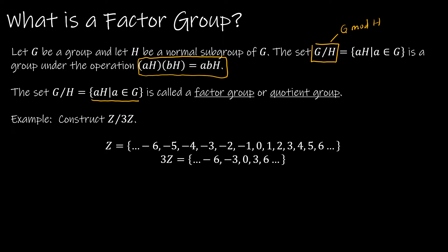Let's talk about how we construct this. The first example is Z mod 3Z. Z is just the integers, and 3Z is the integers that are multiples of 3. To construct Z mod 3Z, we're going to end up with cosets that partition the entire group. So obviously we could start with 3Z.